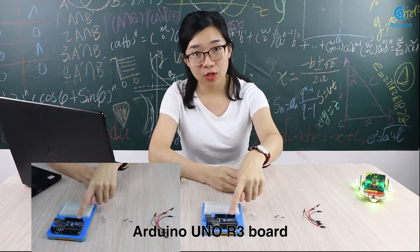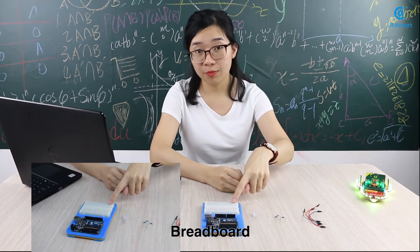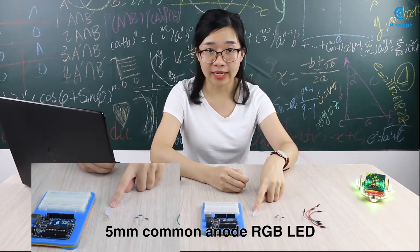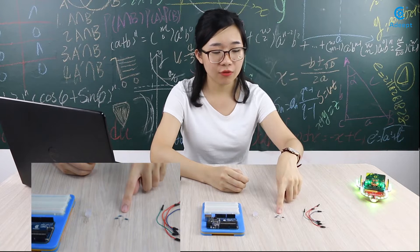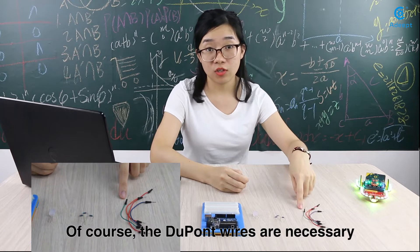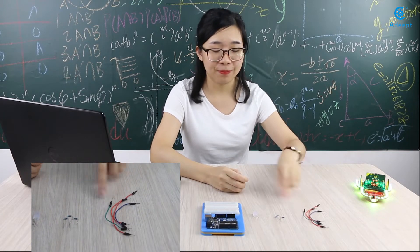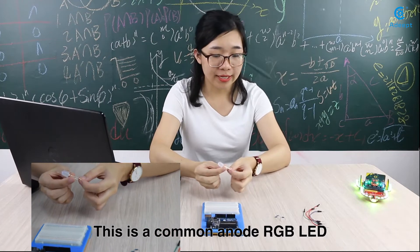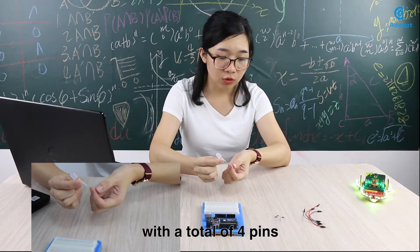In the experiment, we need Arduino UNO R3 board, breadboard, 5mm common anode RGB LED, three 220 ohm resistors, and of course the DuPont wires are necessary. This is a common anode RGB LED with a total of 4 pins.